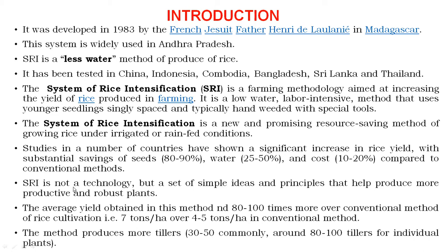SRI is not a technology but a set of simple ideas and principles that helps to produce more productive and robust plants. SRI is a practice of rice cultivation — a resource conservation technology — using simple ideas and practices that can be used for the production of more rice yield. The number of tillers per plant is also more compared to conventional rice cultivation.